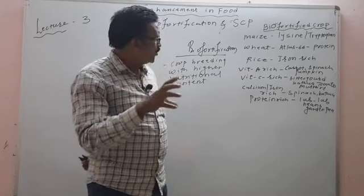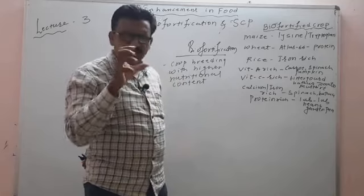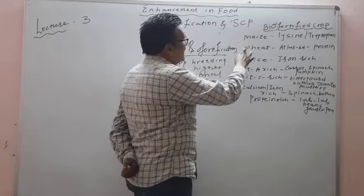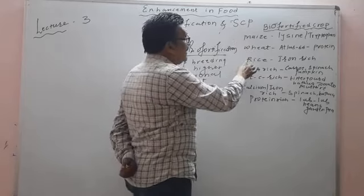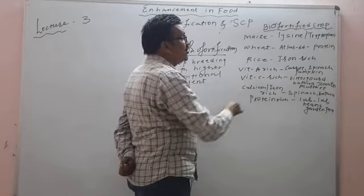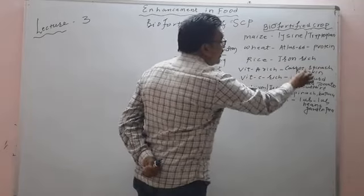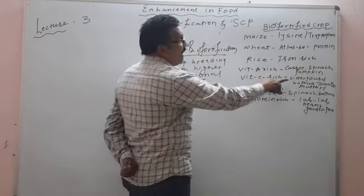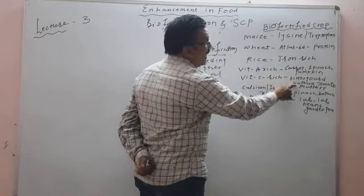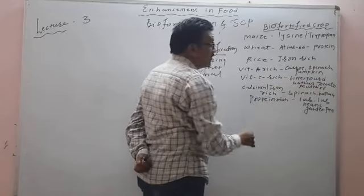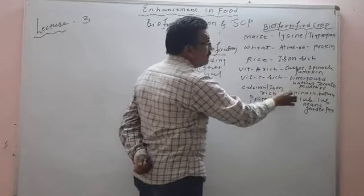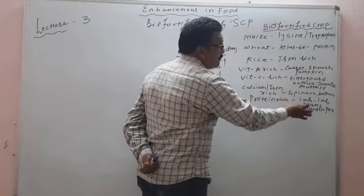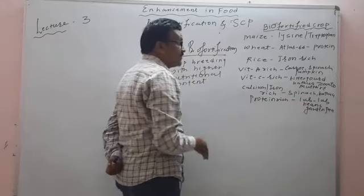Bio-fortified crops are: wheat, rice, carrot, spinach, pumpkin, bitter gourd, bathua, tomato, mustard, lab-lab, beans, and garden peas.